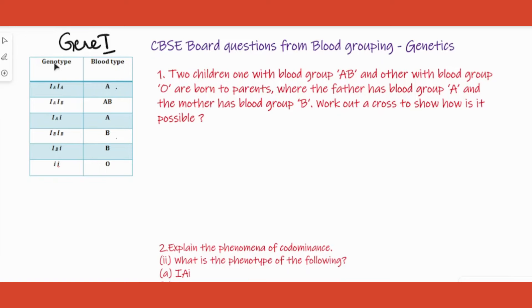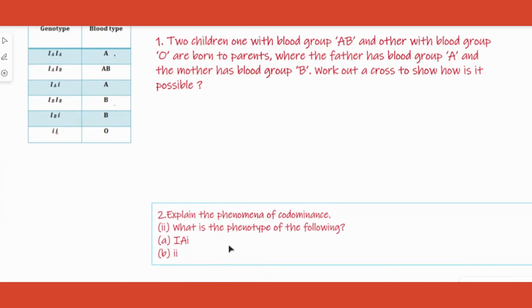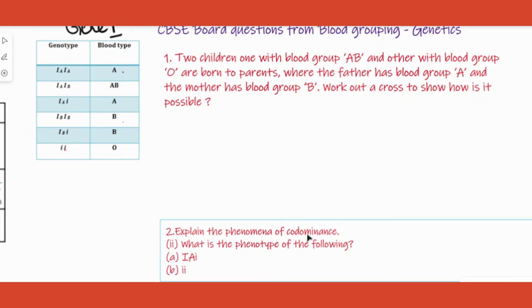Once you're sure which genotype gives which blood group, let's start with the applicatory questions. First question: explain the phenomenon of co-dominance. Co-dominance is a condition where both allelic forms have equal dominance over each other. An example you can use is blood grouping. Please refer to the previous video I uploaded if you are new to this topic.